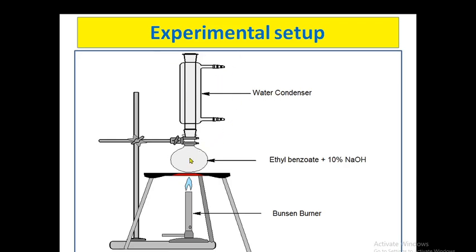Let's see the experimental setup in detail. Ethyl benzoate is taken in the round bottom flask with 10% NaOH, and a water condenser is attached to it. This will be the inlet and this will be the outlet, so there is a continuous flow of water which maintains the temperature. When you heat this round bottom flask on a Bunsen burner, the reaction mixture will boil and the hydrolysis reaction will take place, so all the ethyl benzoate will be converted into the sodium salt of benzoic acid.